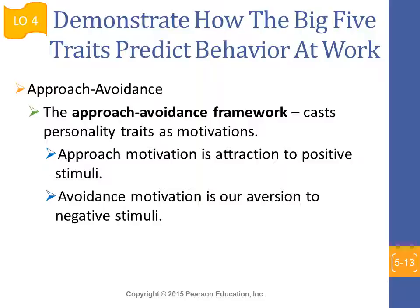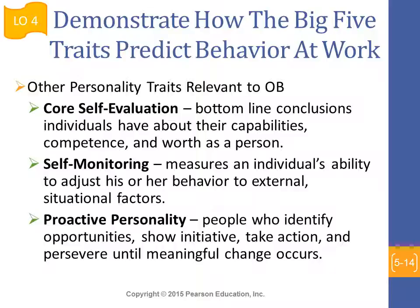There have been different frameworks to demonstrate how the Big Five traits can predict behavior at work. One of these is the approach and avoidance framework, which casts personality traits as motivations. It helps explain how people react to positive stimuli through approach motivation, and how people avert due to negative stimuli through avoidance motivation. Other frameworks include core self-evaluation, self-monitoring, and proactive personality tests.